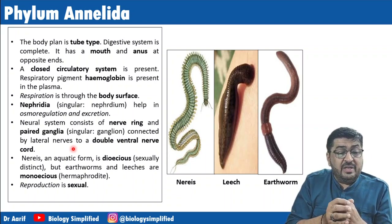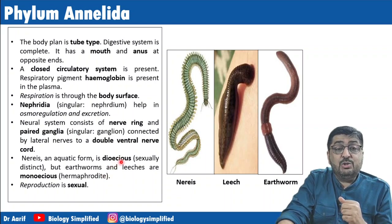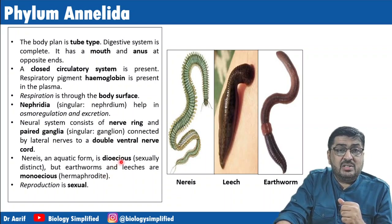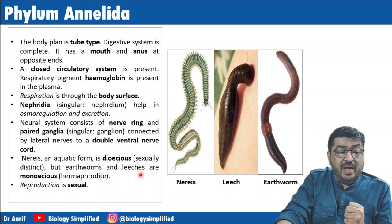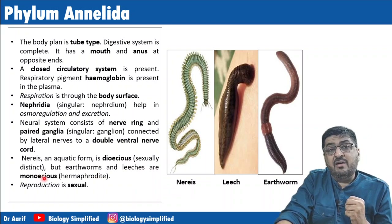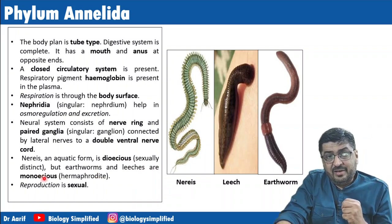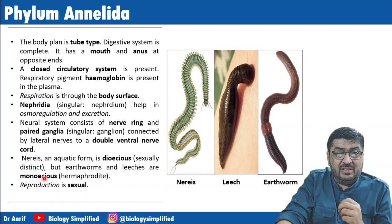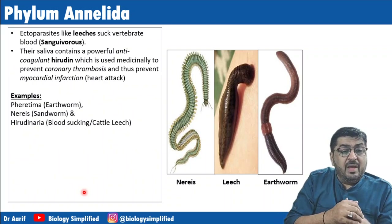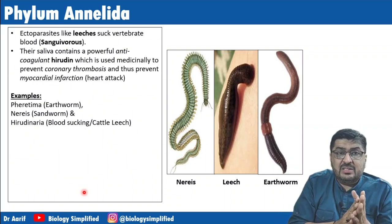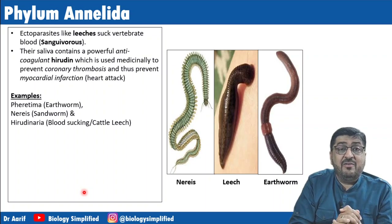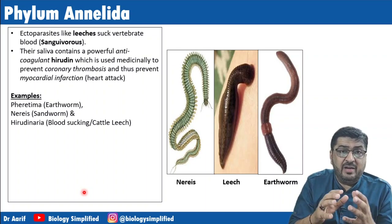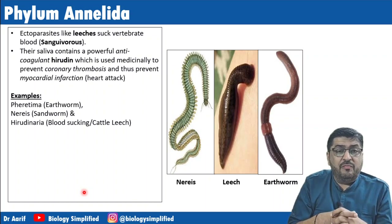Nereis, which is an aquatic form, is dioecious — meaning sexes are separate. Whereas earthworms and leeches are monoecious — they are hermaphrodites. So there can be variation within this phylum. Reproduction is sexual. Ectoparasites like leeches suck vertebrate blood — they are called sanguivorous. The mode of nutrition when they suck blood is called sanguivorous.